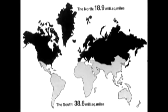The 18.9 million square miles inhabited by Mercator's northern hemisphere compatriots are shown on his map as much larger than the 38.6 million square miles south of the equator, which are primarily inhabited by black and brown populations.